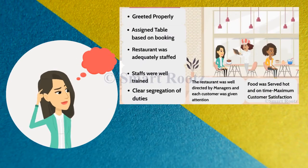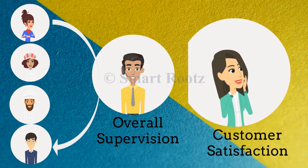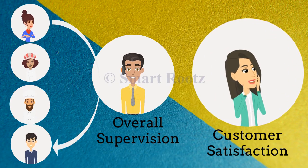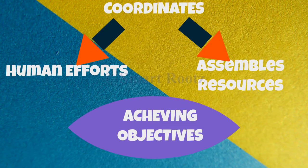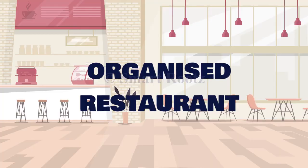Jo recollects her experience at Annie's restaurant. The restaurant had separate departments for hospitality to greet its customers, the kitchen department, the cleaning department, and the finance department, which was under the supervision of a manager. Overall, it was a restaurant which had good coordination among departments and clarity about each department's contribution to maximize customer satisfaction. We can summarize that there was a process in place to coordinate the human efforts and assemble resources to achieve objectives. So we can observe that Annie's restaurant was a well-organized restaurant.